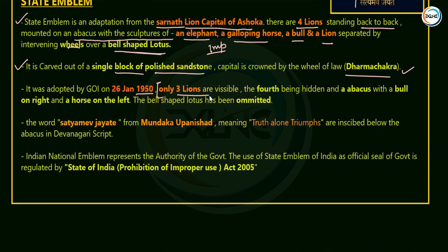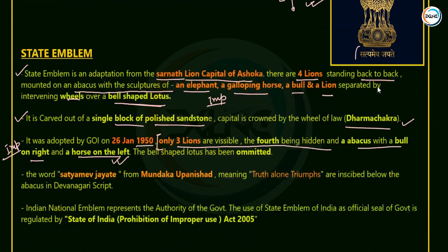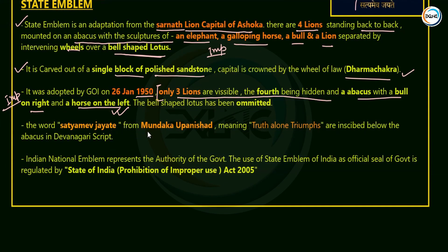When adopted on 26th January 1950, only three lions are visible — the fourth is hidden. The abacus has a bull on the right and a horse on the left. Below the abacus, 'Satyamev Jayate' is written in Devanagari script. This quote was taken from the Mundaka Upanishad — this has been directly asked in UPSC previously. Satyamev Jayate means 'Truth Alone Triumphs,' inscribed below the abacus. This is an important fact from the India Yearbook.